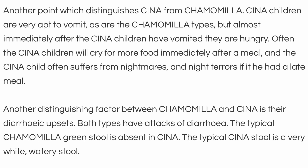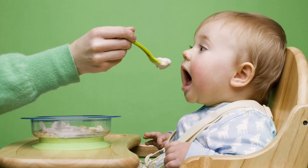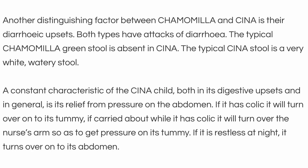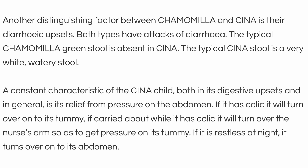Another point distinguishing Sina from Chamomilla: Sina children are very apt to vomit, as are Chamomilla types, but almost immediately after vomiting, Sina children are hungry — they will often cry for more food immediately after a meal. The Sina child also often suffers from nightmares and night terrors after a late meal. Another distinguishing factor is digestive upsets: both types have attacks of diarrhea, but the typical Chamomilla green stool is absent in Sina. The typical Sina stool is a very white, watery stool.